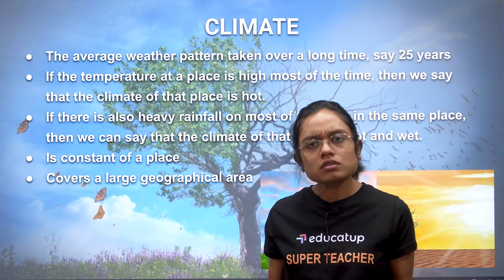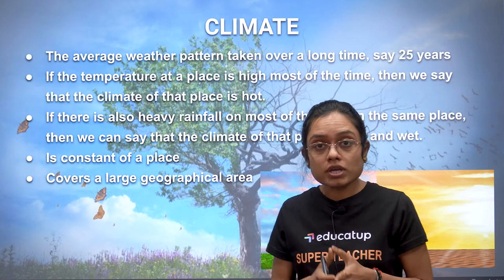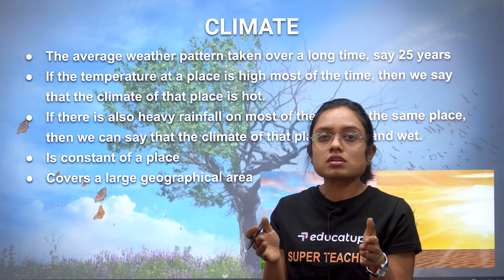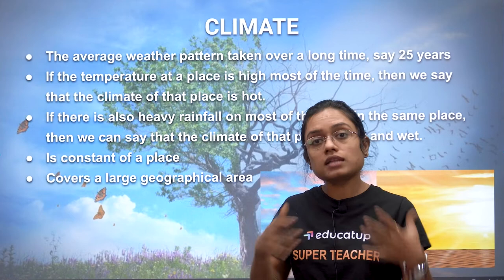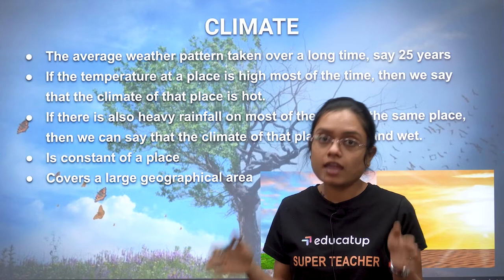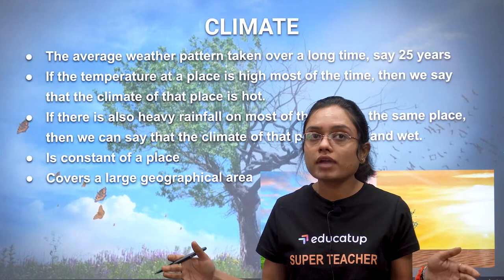Rajasthan is perceived as hot because this has been observed over a very long time. If we talk about Jammu and Kashmir or Himachal Pradesh like Shimla, we know these are very cold places — because the atmospheric pattern at these places has been extremely cold for a long time. Climate is an atmospheric condition that sustains for a very long time.